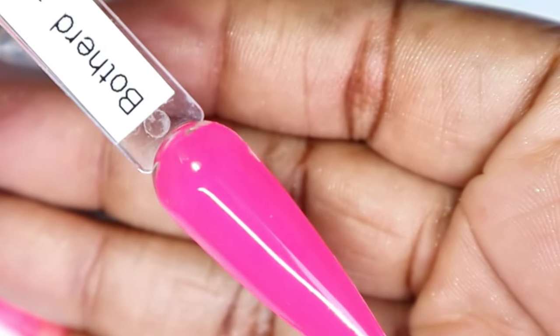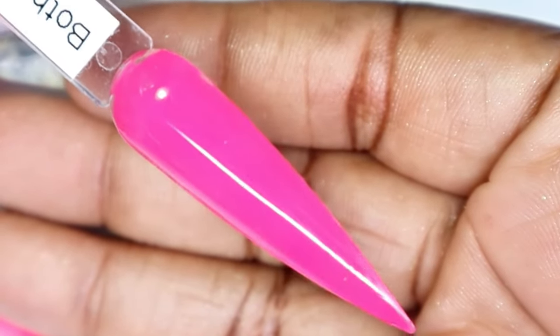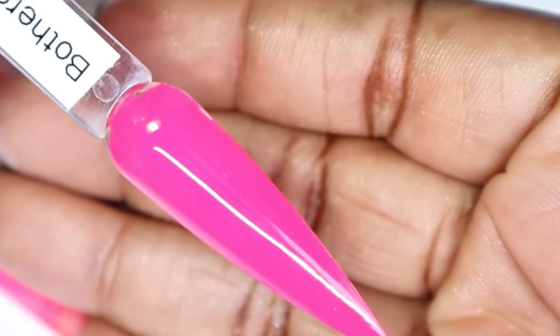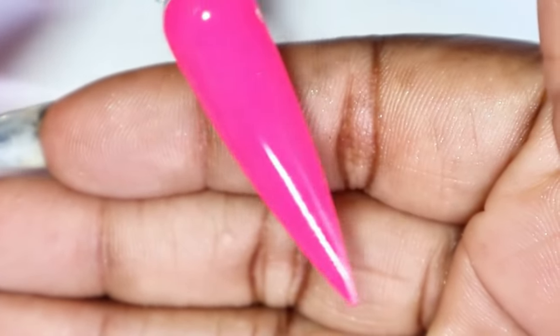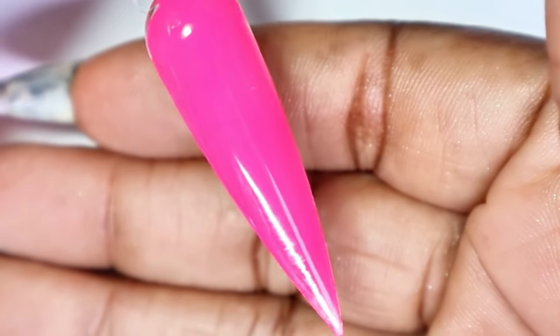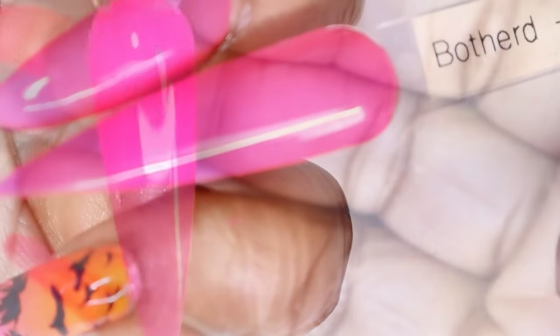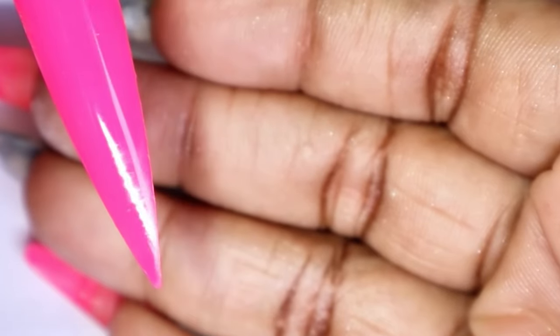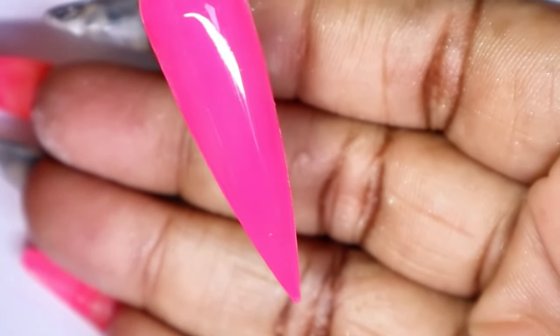And here is one coat of Bothered. As you can see, it is so opaque and is actually a really gorgeous pink. My camera is picking it up a bit lighter. It is just a shade darker than what it is showing on camera. But again, this is such a nice pink. It's almost similar to this pink that I'm wearing on my nails. But yes, one coat coverage. Very gorgeous color. So I'm just gonna let this sit and dry.